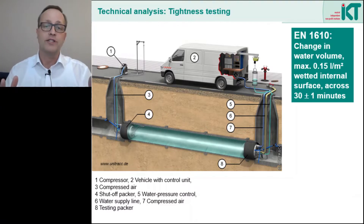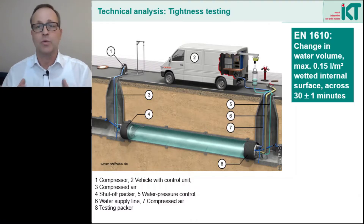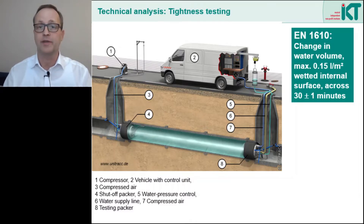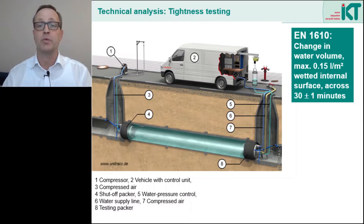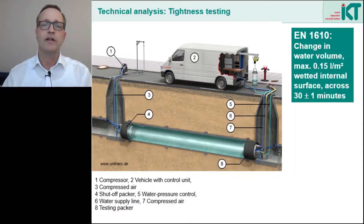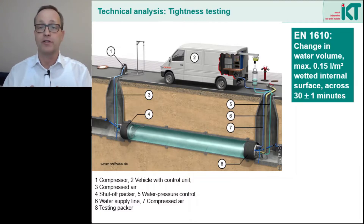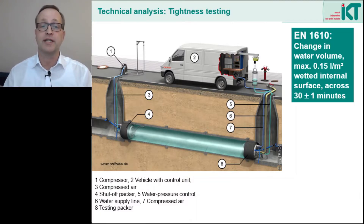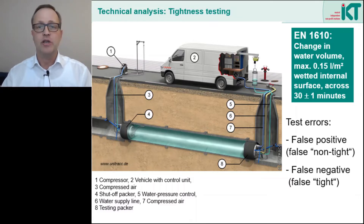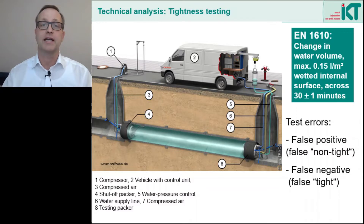Of course, there is not only the test with water. Alternatively, you can also test with air pressure. In this case, the pressure loss over the test time is compared with a tolerance value. However, it is not only the test method and the limit values that are important for assessing the informative value of a test result. In addition, we also need to know what errors can occur during a test.